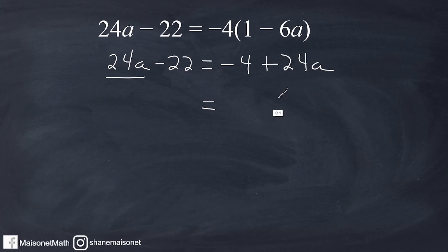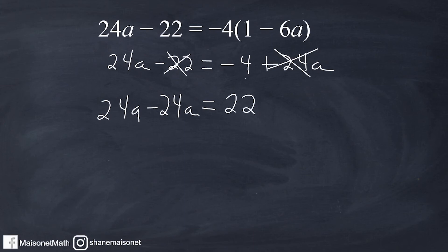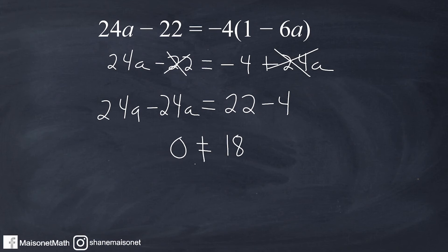Let's talk about why that is. If I took this positive 24a and moved it to the other side, I'd bring down 24a here and move the positive 24a to the other side by writing minus 24a. Then if I took this negative 22 and moved it to the other side as positive 22, and combined it with minus 4 — at this point we have something minus itself, which results in zero. And on the other side we have 18. We know that zero is not equal to 18, so when you come up with something that is not equal, you know that there is no solution to that equation.